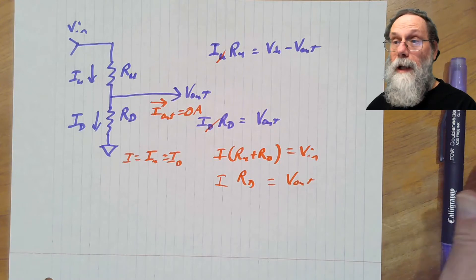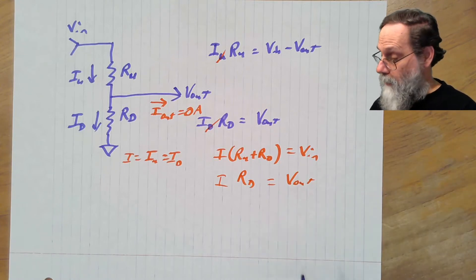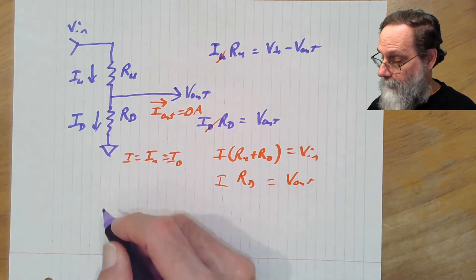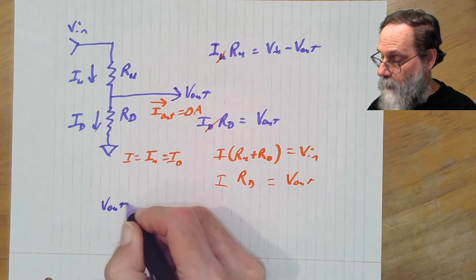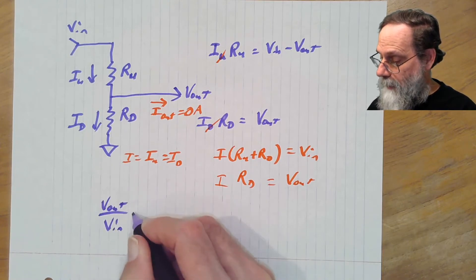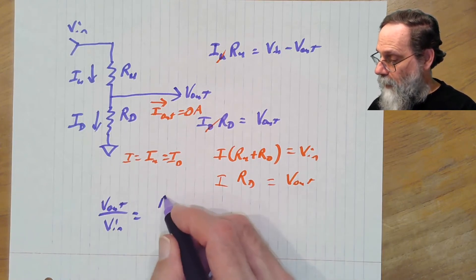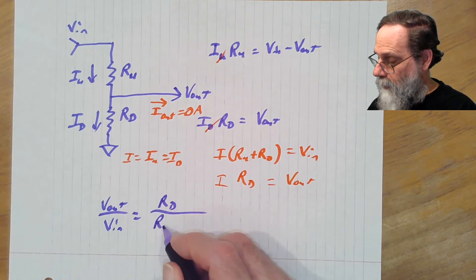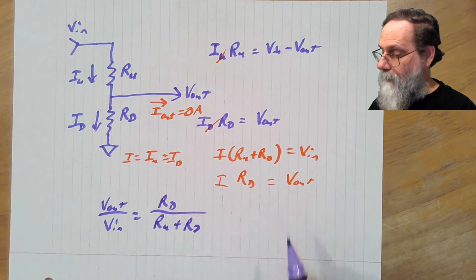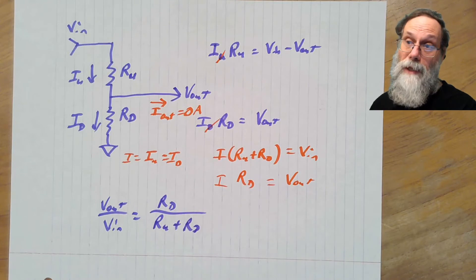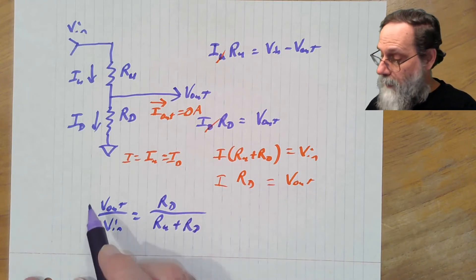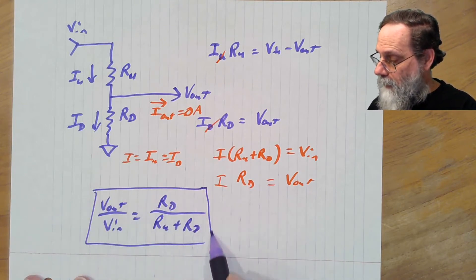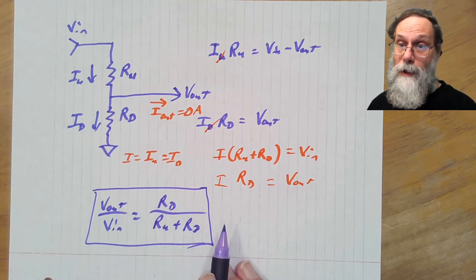But we also have that I times Rd is equal to the output voltage. What happens if we take the ratio of these two equations, Vout over Vin? Vout over Vin is going to be equal to Rd over Ru plus Rd. Notice that the currents cancel.